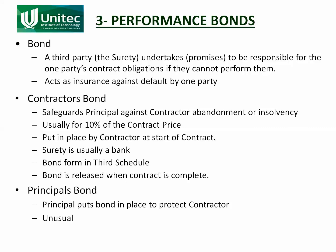A rarer version is the principal's bond. This is where the principal puts the bond in place to protect the contractor. The same mechanism applies — there is a surety — and if the principal reneges on payment or doesn't fulfil his obligations, then the surety will pay the contractor the agreed amount of money.